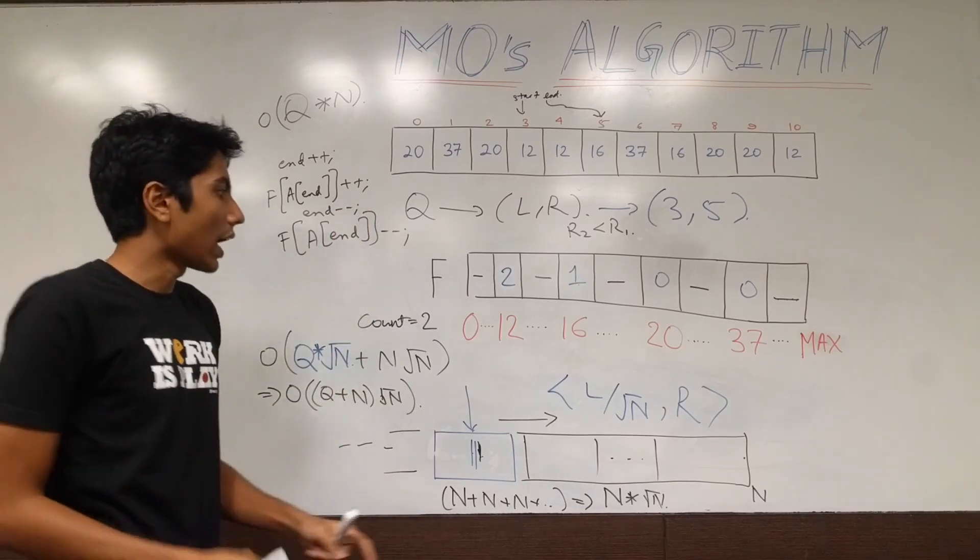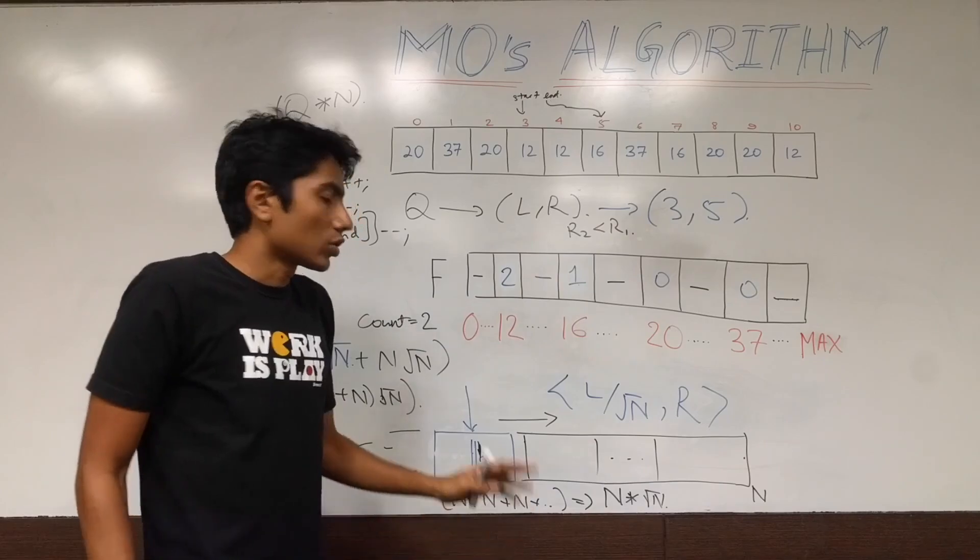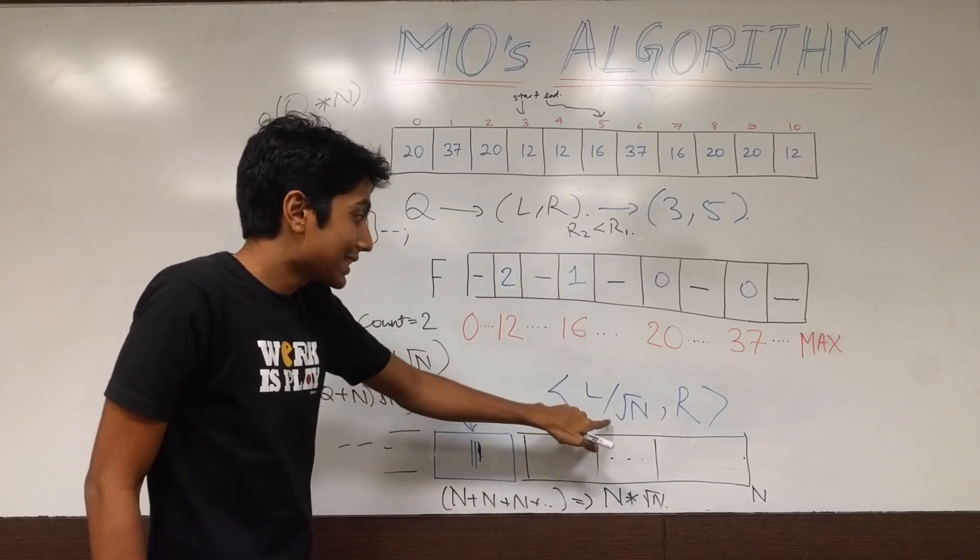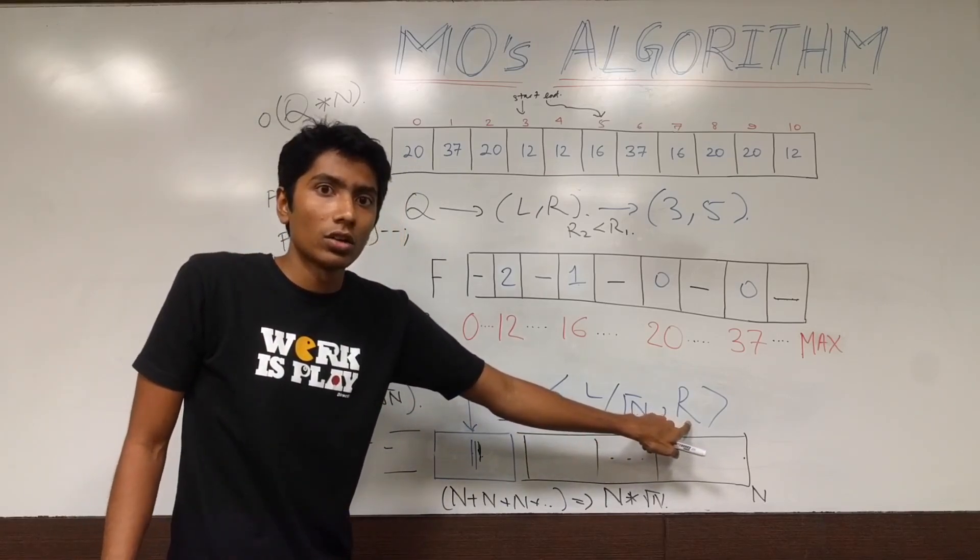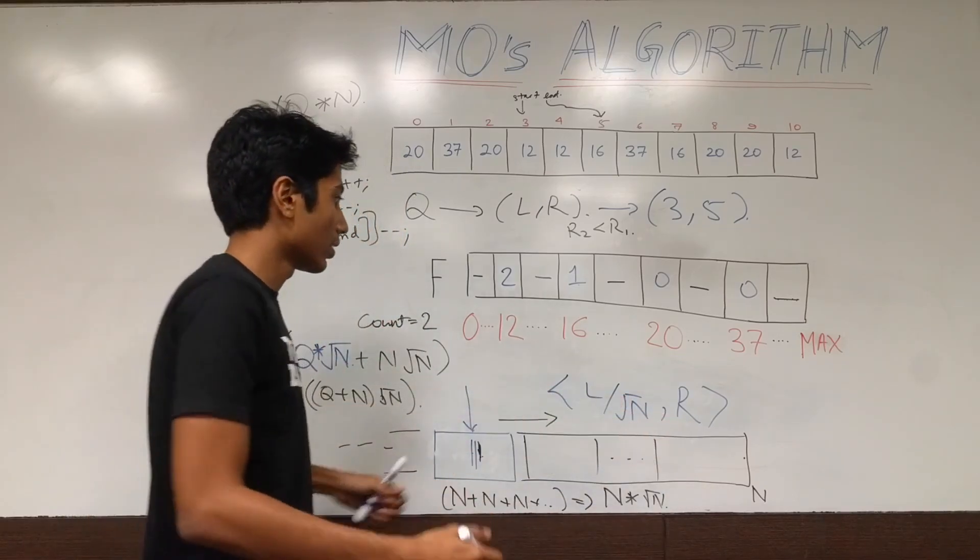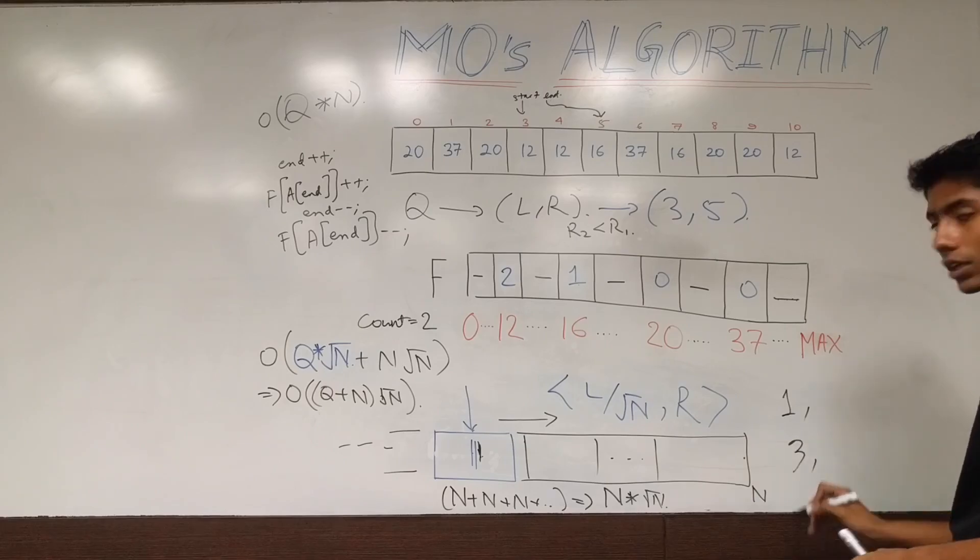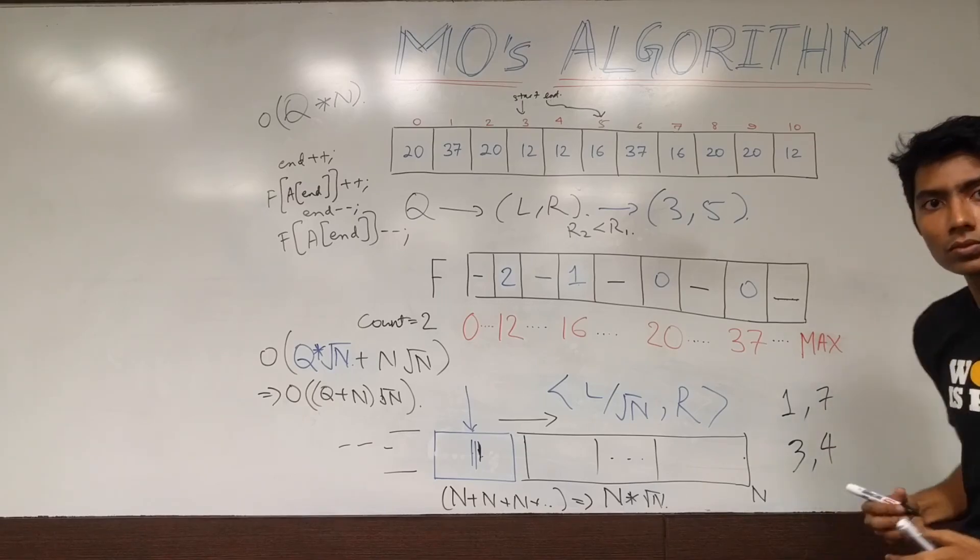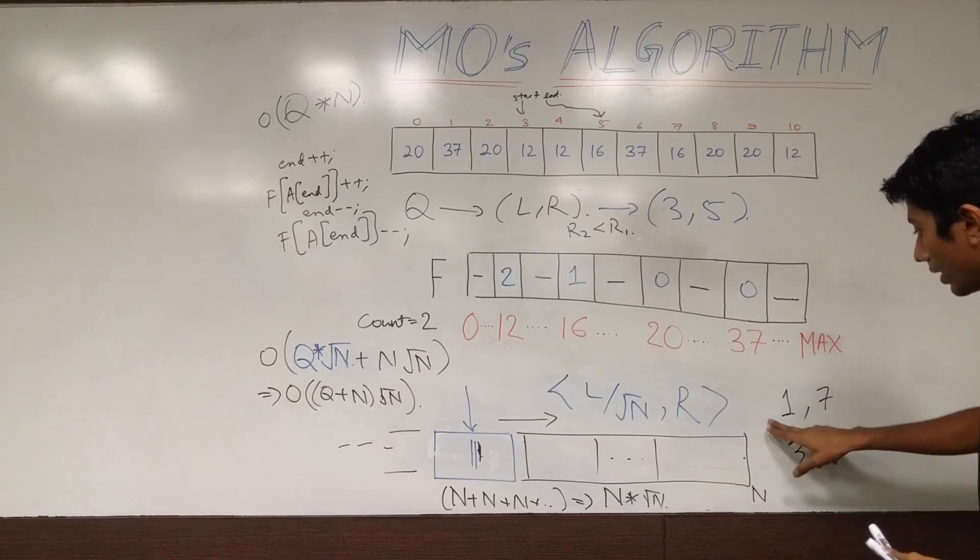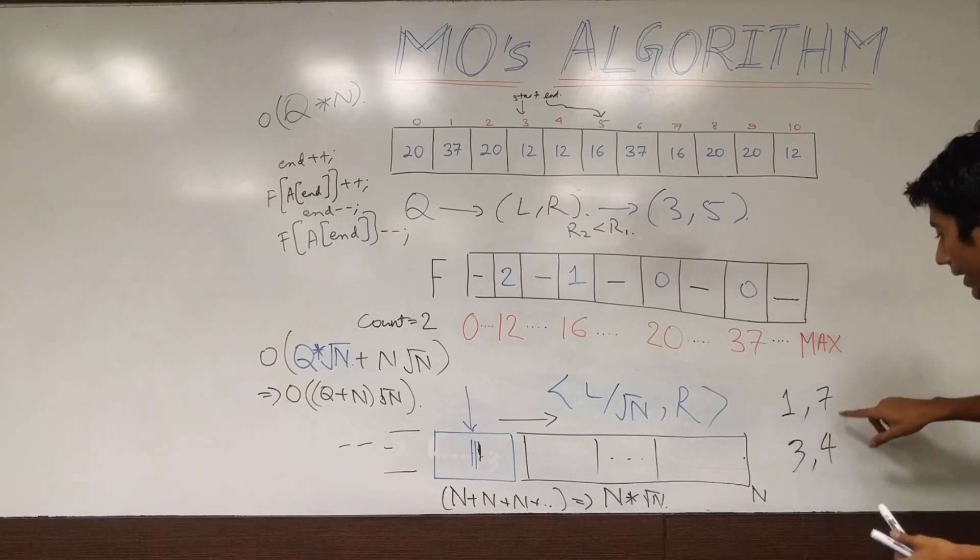Now, you might think that how is that even possible, right? The second right cannot be less than the first right. So, remember, for the same block, left block index, the rights are in ascending order, but overall there is no guarantee. If the first left block is at 1 and the second one is at 3, this could be 7 and this could be 4. We first sort on the block index and then on the right index.